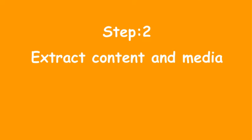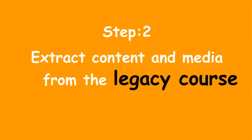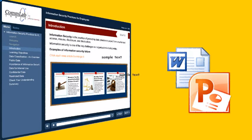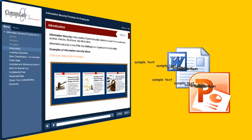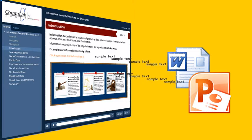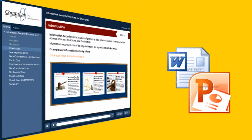Once you have the necessary files, you have to extract the content and media from the legacy course. You need to copy the text of the on-screen content and the labels of all navigational buttons in the graphical user interface (GUI) in a MS Word document or PowerPoint presentation.